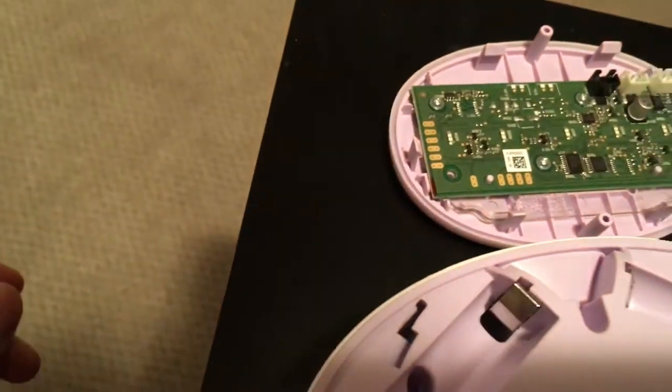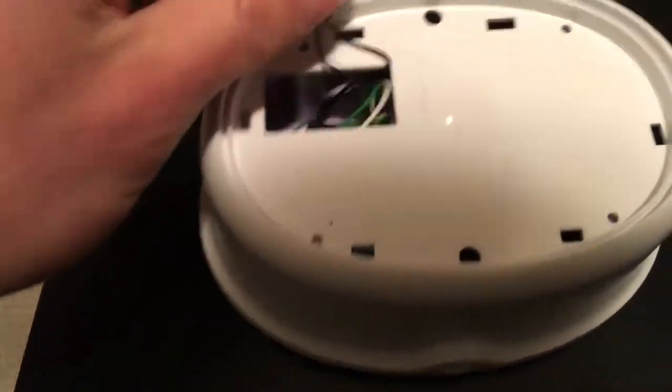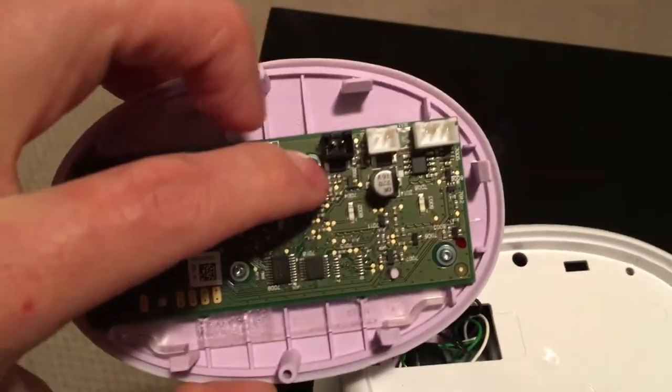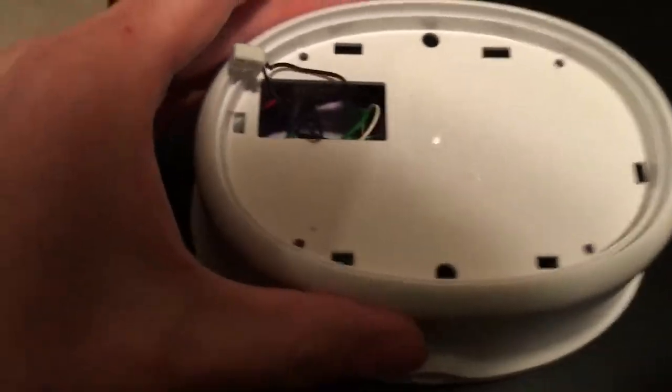Once you've got all six clips, it's kind of easy after that. You basically just disconnect three clips or three little clips that hold these connections in. Once you've got the three clips taken off, you just slide this up.